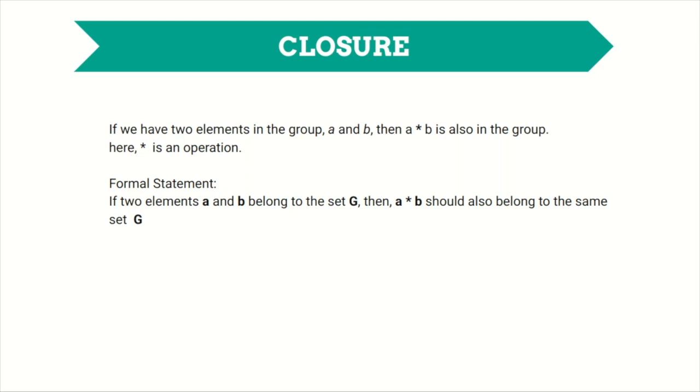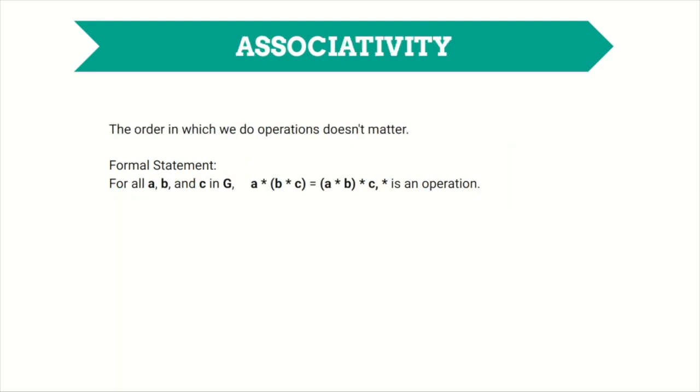Number two: associativity. All it means is that the order in which we do operations doesn't matter. The formal statement says for all a, b, c in G, a operation (b operation c) is same as (a operation b) operation c.